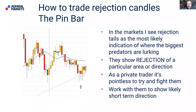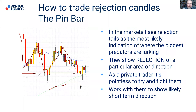What we want to do is work with these rejection candles to show likely short-term direction. In this chart of gold, prices moved down until it hits the 200-period moving average at an area of demand seen before. And then what do we see? Not one, not two, but three candles providing rejection — three wicks pointing down, giving an indication of reversal. That is a confluence event: rejection candles happening at the 200-period moving average, which is also at an area of demand.